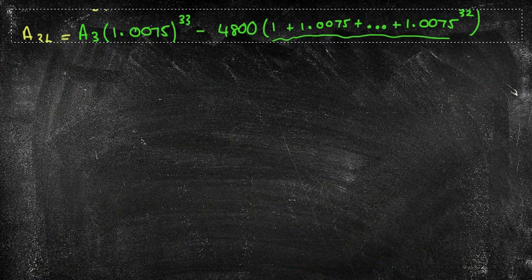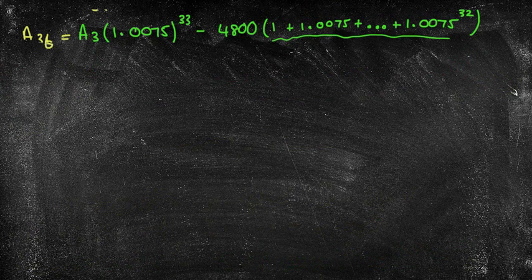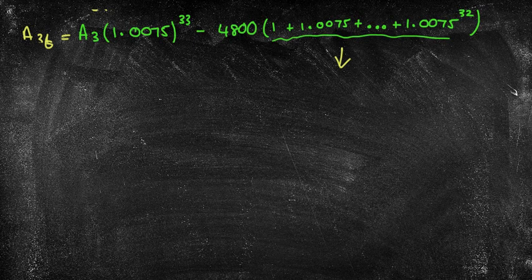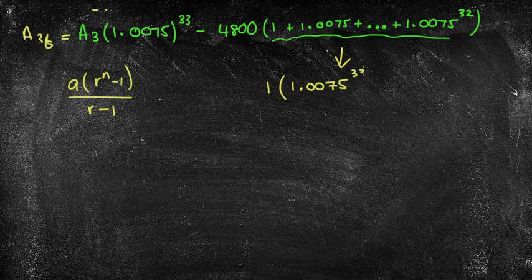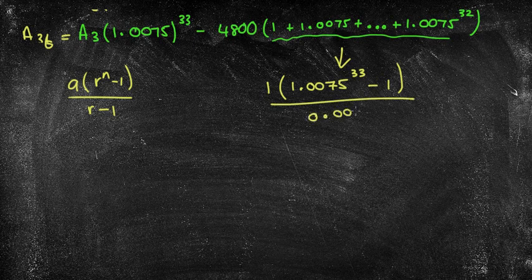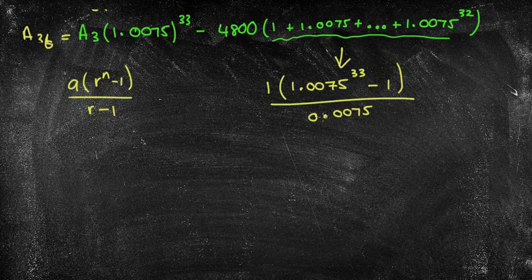So what you can start to see is I'm starting to form my series because what I want to find is an expression for what A36 is going to be. So I've got A3(1.0075) to the power of, now that was 5 and that's 2, so it means I've subtracted 3 from that. So 36 take away 3 is 33, minus 4800. Now this is going to be a series inside here. So I now need to recreate this as a series. Remember our series is going to be your a(r^n - 1)/(r - 1) where r is greater than 1. So the 1 is my a, I've got 1.0075 to the power of, now I know it says 32 but remember it's 33.